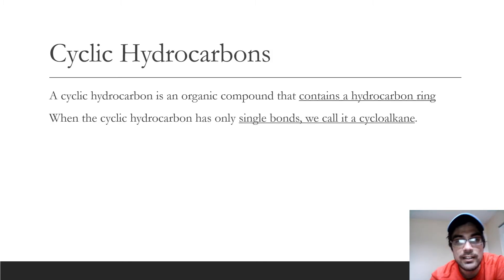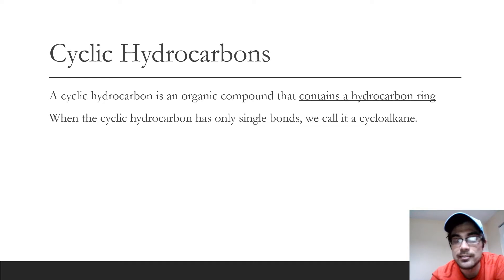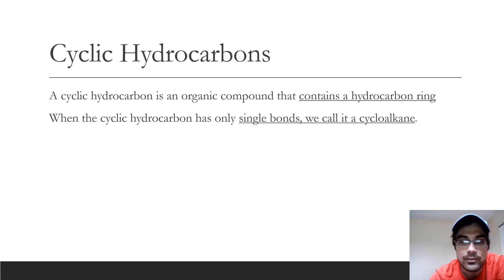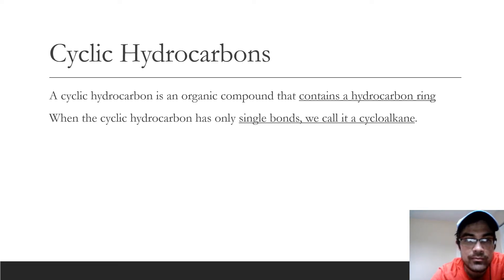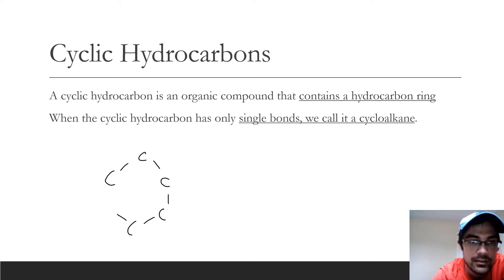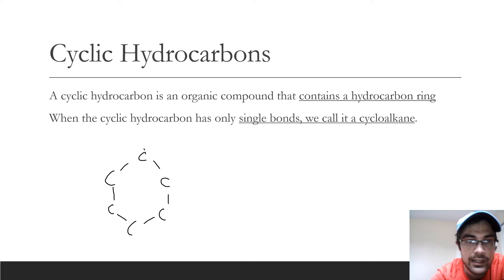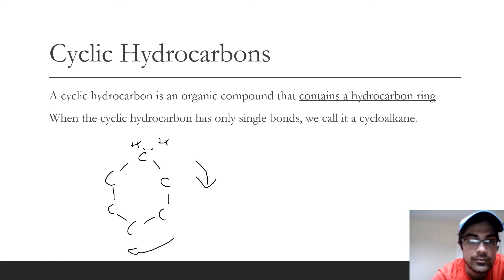The first thing we're going to look at is cyclic hydrocarbons. These are called cyclic because they eventually form a ring-type structure. What that means is the carbons loop back and connect with each other, and then the rest of the bonds are filled in with hydrogens, all the way around the ring.